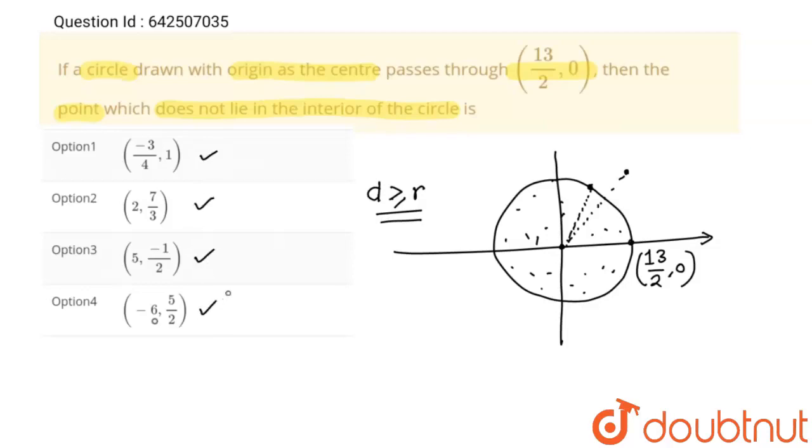Distance of the first option point from origin will be √(9/16 + 1). This will give √(25/16), and this equals 5/4. And 5/4 is less than the radius, so this point in option 1 will lie inside the circle.